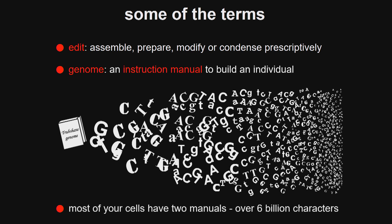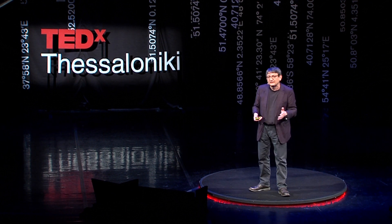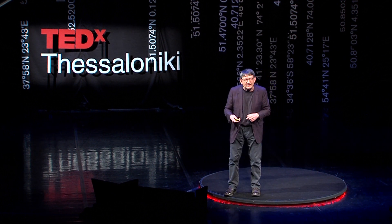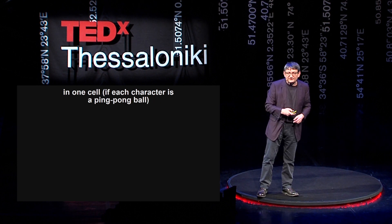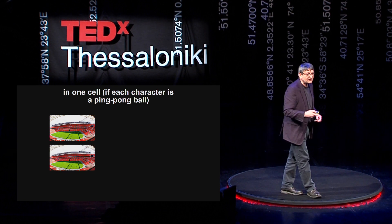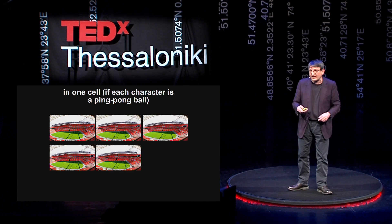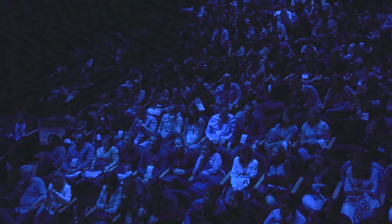These instruction manuals are each huge — each contains 3.2 billion characters. If you imagine that each one of these characters is a ping-pong ball, to give you an idea of how many characters there are in each of your cells: if each one is a ping-pong ball, there will be enough in one cell to fill Wembley Stadium not once, twice, three, four, or five times, but six times. So as you can see, I'm talking a lot of balls.